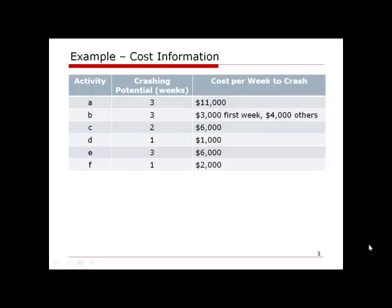The crashing potential information is listed in a table showing each activity, the maximum number of weeks we can crash it, and the corresponding cost per week to crash. Activity B has a special cost structure: $3,000 for the first week crashed, but $4,000 per week for any additional weeks beyond that.